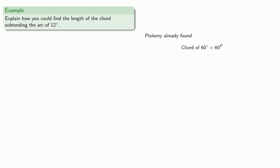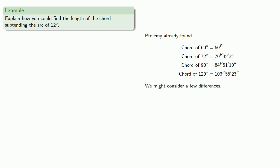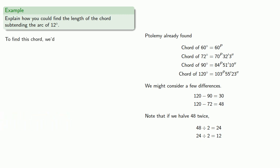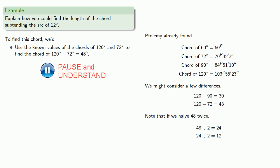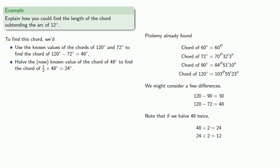Remember, Ptolemy already found the chord of 60, 72, 90, and 120 degrees. So we might consider a few differences. Taking the chords whose lengths we know: 120 minus 90 is 30, and 120 minus 72 is 48. Notice that if we have 48 twice, we get 12. So if we want to find the chord of 12 degrees, we'd use the known values of the chords of 120 and 72 degrees to find the chord of 48 degrees, then halve the now-known chord of 48 degrees to find the chord of 24 degrees, and again halve the now-known chord of 24 degrees to find the chord of 12 degrees.